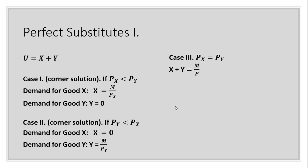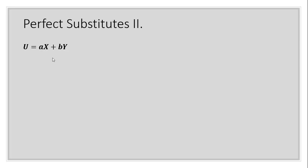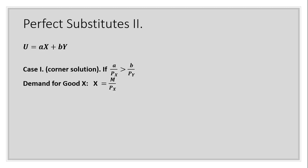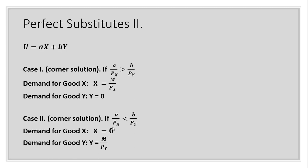Here's another example of perfect substitutes. Utility equals a times x plus b times y, where a represents the marginal utility of good x and b represents the marginal utility of good y. Case one is a corner solution: if the marginal utility per dollar of good x exceeds the marginal utility per dollar of good y, the consumer spends all income on good x. The demand for good x is income divided by the price of good x, and the demand for good y is zero.